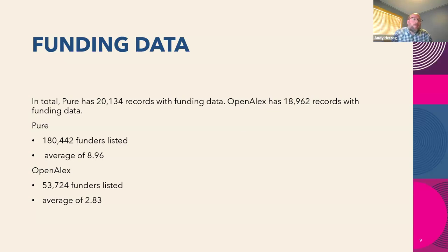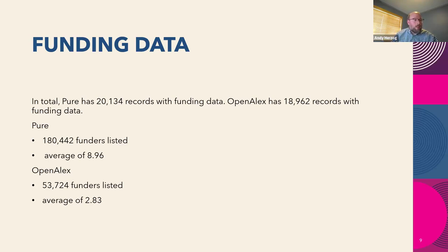I was also curious about funding data, which Pure has added as a newer field. In my dataset, there were about 20,000 records in Pure with funding data and about 18,000 in OpenAlex. While I wasn't able to do a deep dive on accuracy, I was able to compare how many funders were listed. Pure had 180,000 funders listed — about an average of nine per record — while OpenAlex had about 53,000, averaging about three per record.